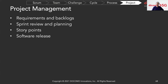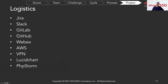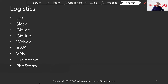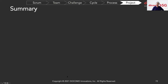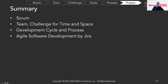Back to project management: I talked about story points, the demo, and logistics. We introduced Jira, Slack, GitHub internally, WebEx, AWS, VPN, Lucidchart for design document visualization, and PHPStorm. In summary, we covered Scrum and team members, the challenge for time and space, the development cycle and process, and software development management via Jira.